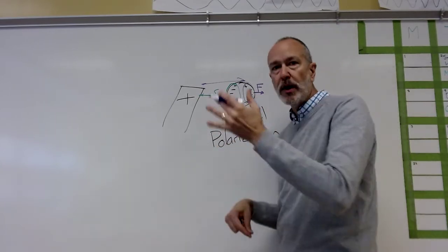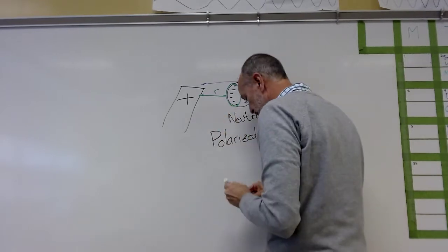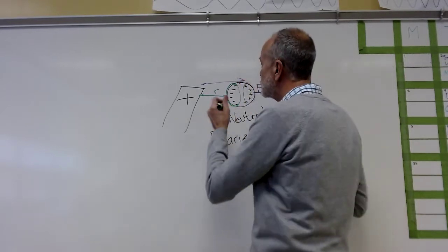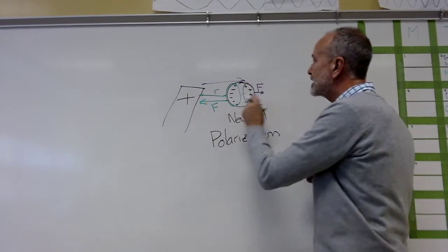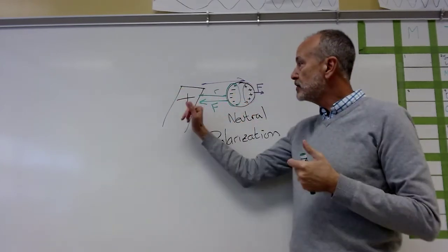These are closer. Remember, 1 over r squared. Closer is kind of a powerful thing. This side is going to be more strongly attracted than this side, so we'll end up being drawn towards this.